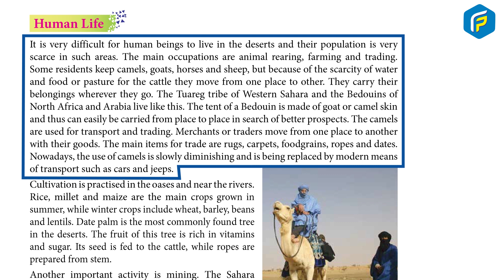The tent of the Bedouins is made of goat or camel skin, and thus can easily be carried from place to place. In search of better prospects, camels are used for transport and trading. Merchants or traders move from one place to another with their goods. The main items traded are rugs, carpets, wool, ropes, and dates. Nowadays, the use of camels is slowly diminishing and is being replaced by modern means of transport such as cars and jeeps.